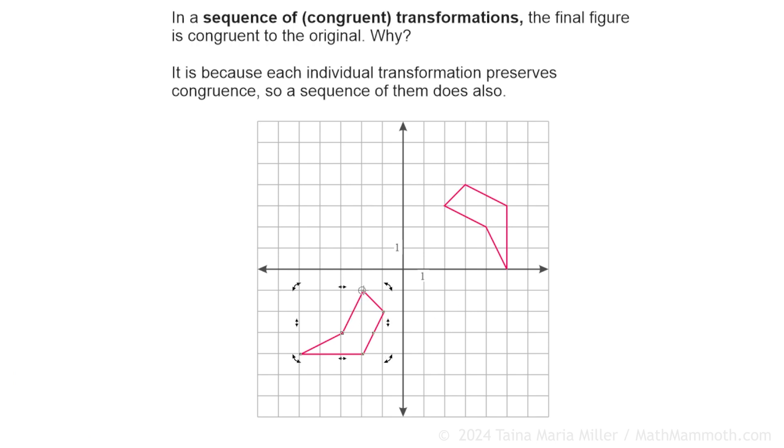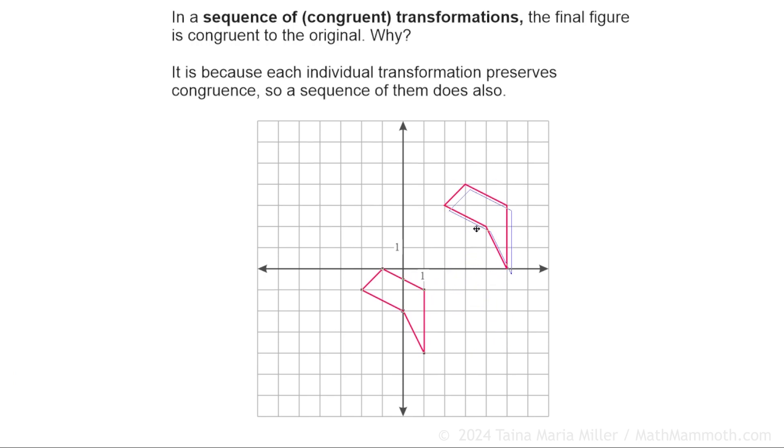I will rotate it around this point. This is one of the vertices of the figure. Here we go. It has been rotated 90 degrees around one of its own vertices, and then we can see that the translation will work four units to the right and four units up. Here's four units to the right and then four units up.